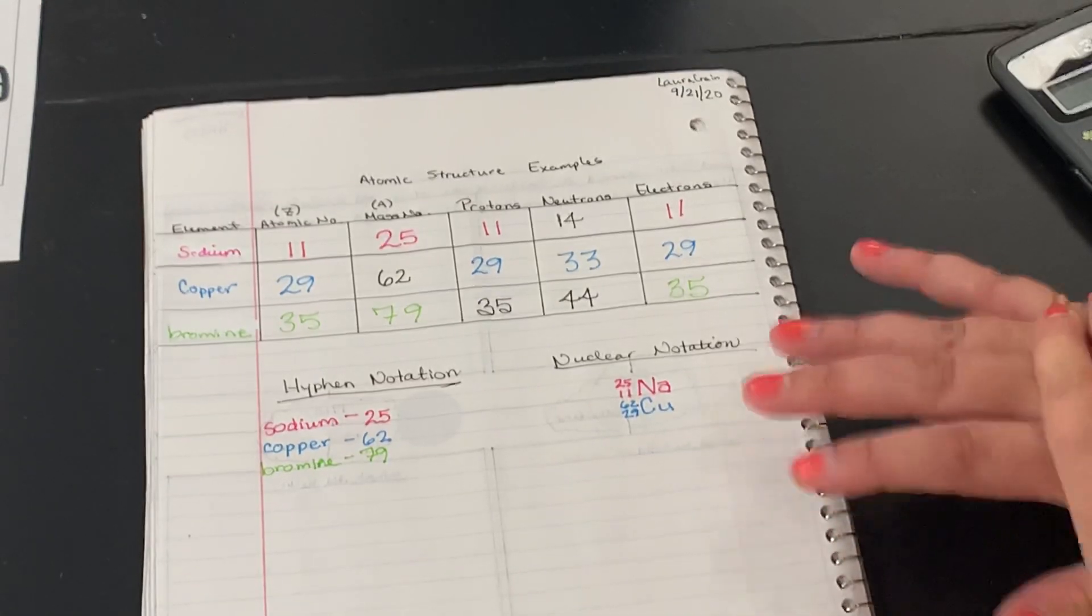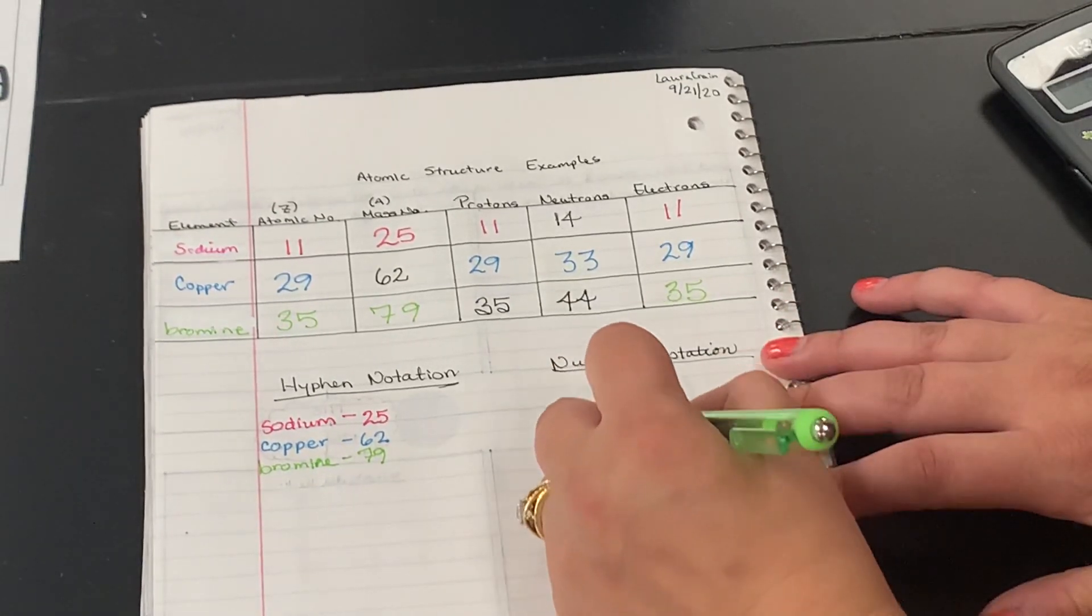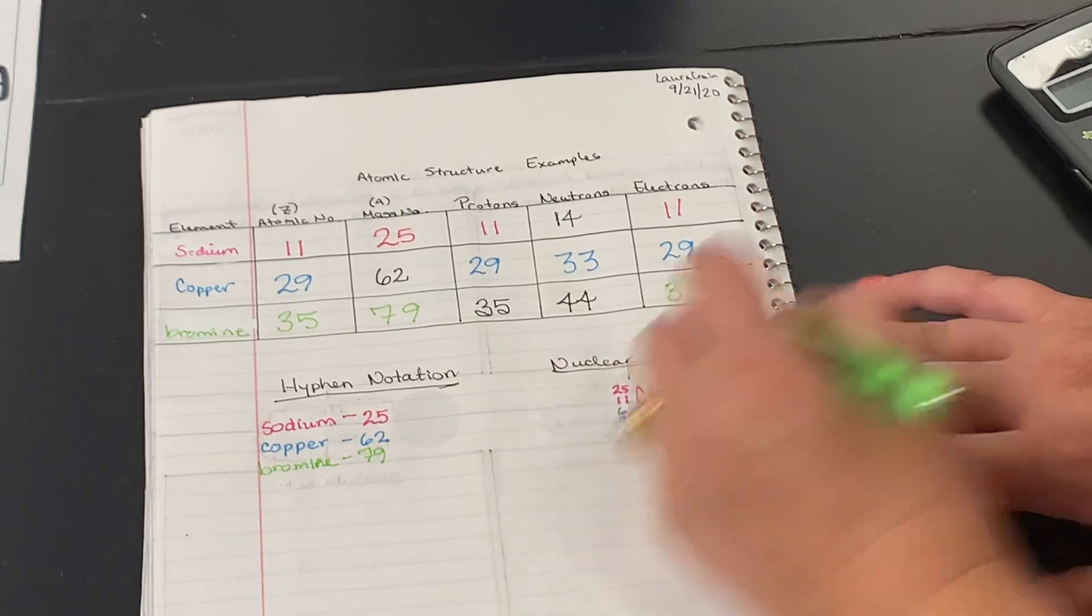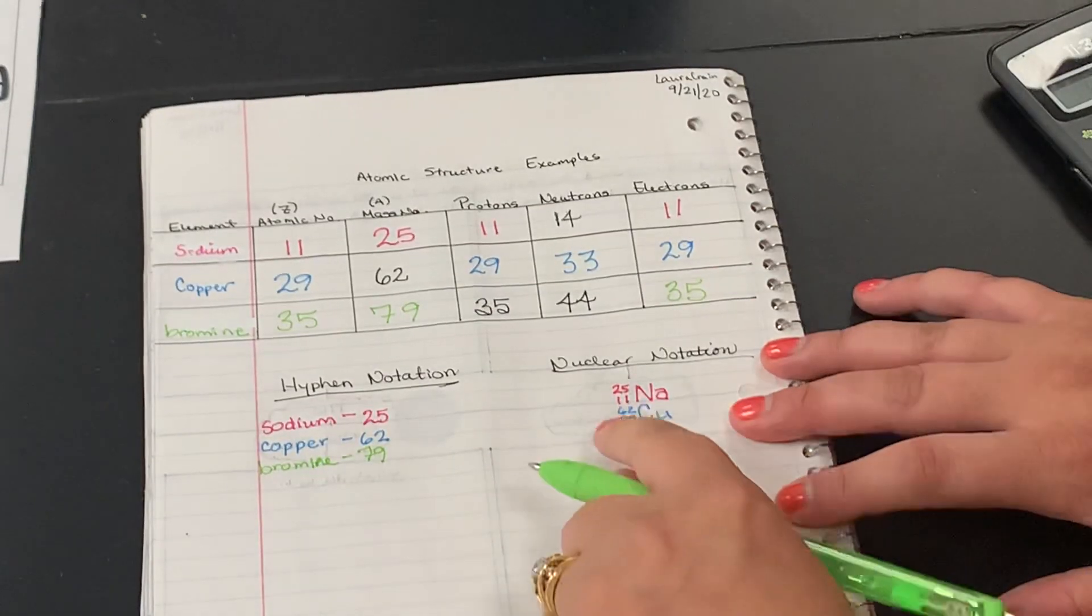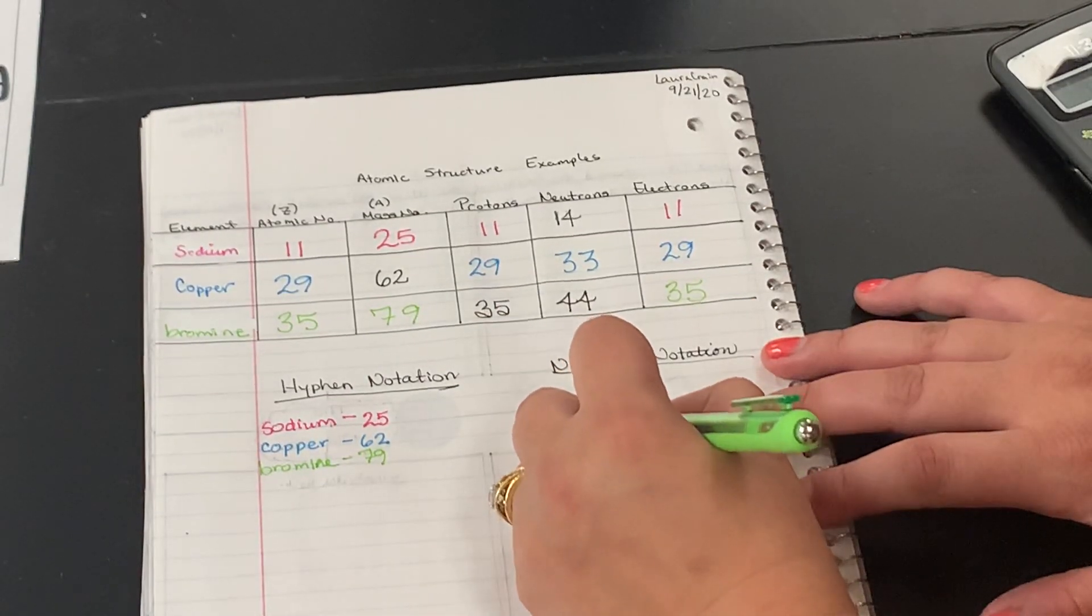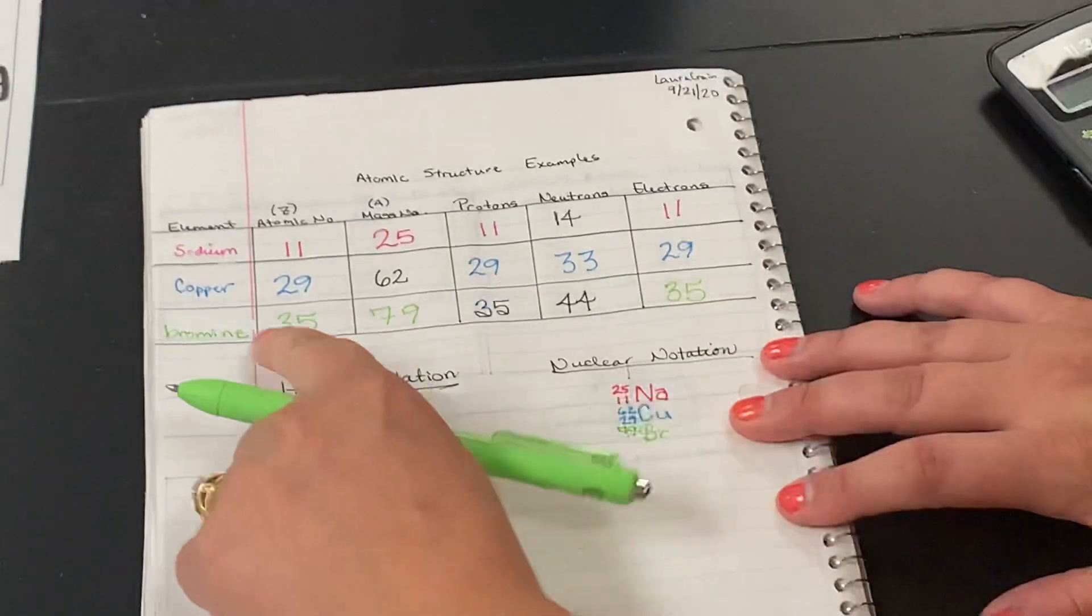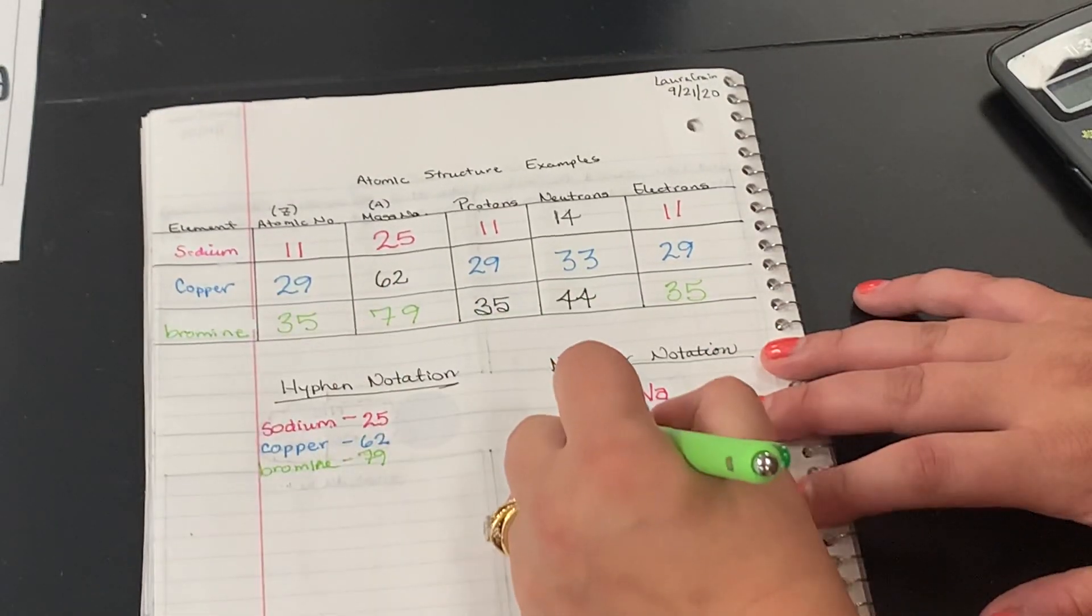For the nuclear notation, we're going to write the symbol. Bromine is capital B, lowercase r. Mass number goes on top, so we're going to put that 79 on top. And then on bottom we need the atomic number, so we're going to put 35.